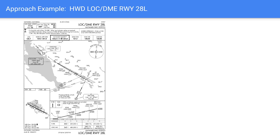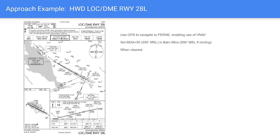The second approach is the localizer DME runway 28L at Hayward. It's a localizer approach — we use the green needle inside the final approach fix, but GPS to navigate to the FAF at FERNI, allowing VNAV to descend through step-downs at Bryan and GBEN. Because it's an MDA, set MDA+50 in Baro-Mins: 550 feet MSL for straight-in, or 590 feet for circling. Once cleared, set FAF altitude in alt-select and arm VNAV to descend using VNAV all the way to the FAF.